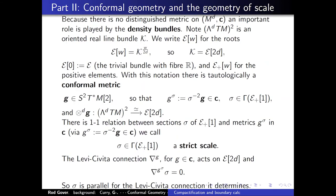We're on to part two: conformal geometry and the geometry of scale. Because there's no distinguished metric on a conformal manifold — just an equivalence class — an important role is played by what are called density bundles. They're secretly important in Riemannian and pseudo-Riemannian geometry but get trivialized by a choice of metric, which is why you don't think about them much.